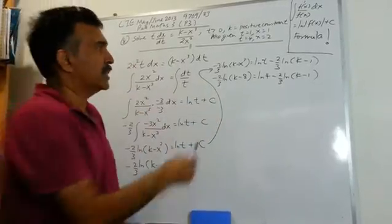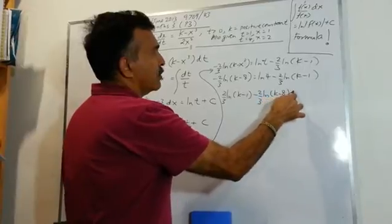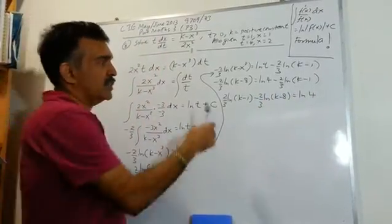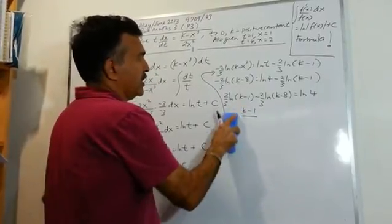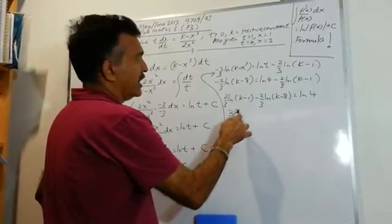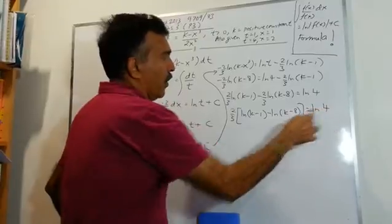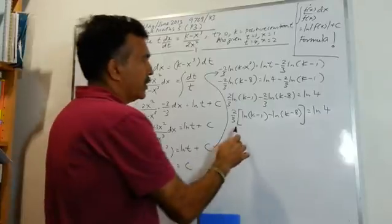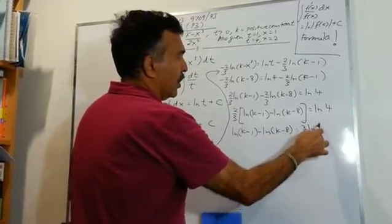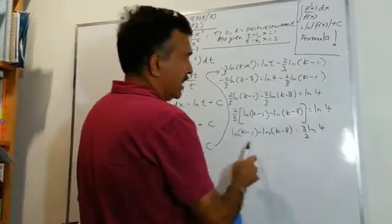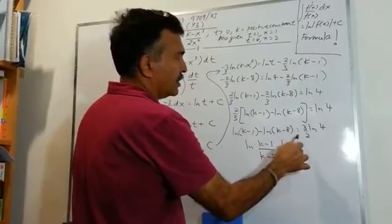Let's bring the -2/3 · ln(k - 1) to the left. We get: 2/3 · ln(k - 1) - 2/3 · ln(k - 8) = ln 4. Take out the 2/3: ln(k - 1) - ln(k - 8) = ln 4. Now take the 2/3 to the right: ln(k - 1) - ln(k - 8) = 3/2 · ln 4. Using log properties, we can write this as ln[(k - 1)/(k - 8)] = ln(4^(3/2)).